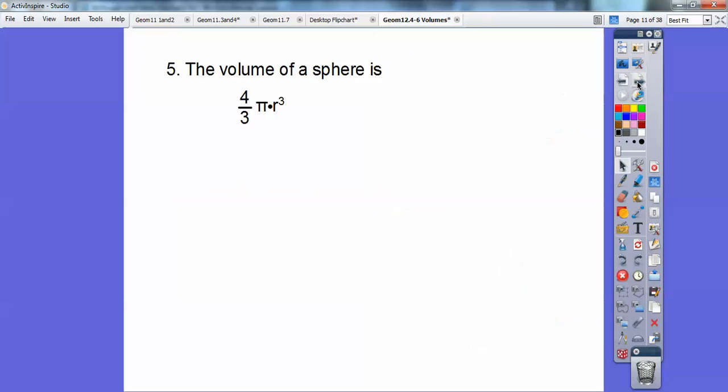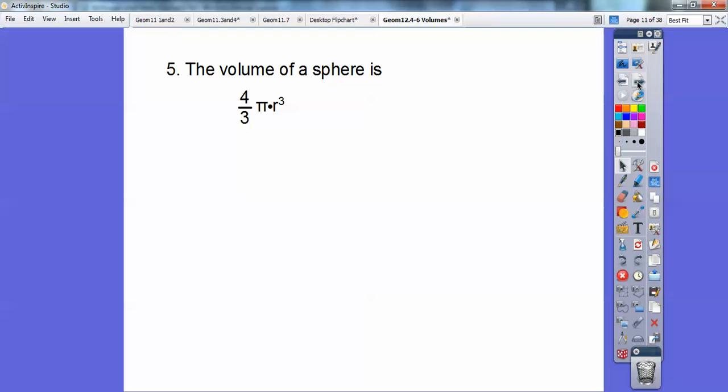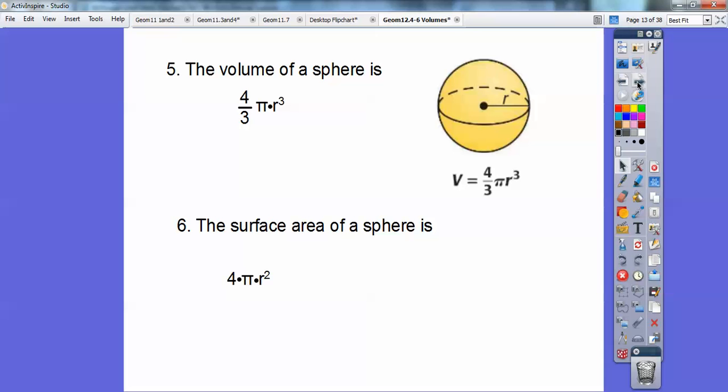Alright, and so the volume of a sphere, a sphere we haven't talked about yet, but a sphere is a ball, like a basketball or a soccer ball. It's four-thirds πr³. And so there's our sphere right there, four-thirds πr³. And then the surface area, I'm going to throw this in there. This is going to be square units because it's area, is 4πr².